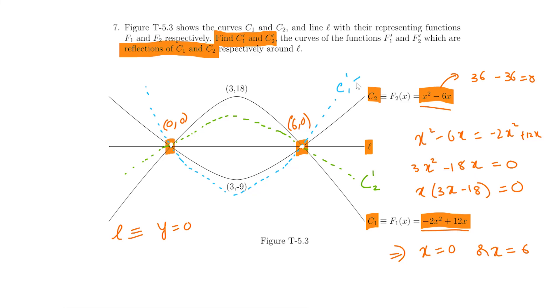So, C1 dash would then be minus x square plus 6x whereas C2 dash would now be 2x square minus 12x.